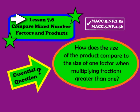Hi, 5th graders. Welcome to Lesson 7.8, Compare Mixed Number of Factors and Products. The essential question for this lesson is: how does the size of the product compare to the size of one factor when multiplying fractions greater than one? Go ahead and open up your GoMath workbooks to Lesson 7.8, found on page 159, and let's get started.